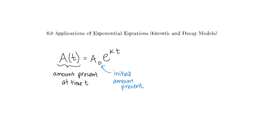E is the natural base — it's like the number 2.7, the irrational decimal that goes on forever. K here is our growth rate or decay rate. And T is our variable, like X, and it represents time.